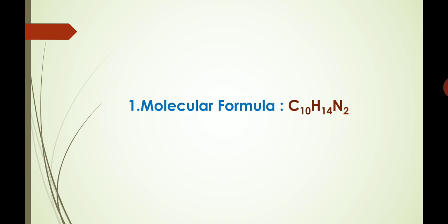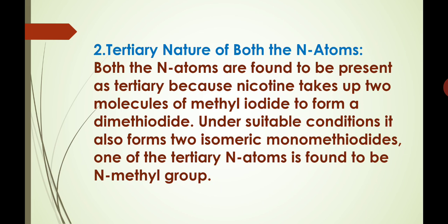Now we will discuss its structure. Its molecular formula is C₁₀H₁₄N₂, which is ascertained with the help of elemental analysis and molecular weight determinations. As we see its molecular formula contains two nitrogen atoms, so the next point is to decide the functional nature of the nitrogen atoms. It has been observed that both nitrogen atoms are tertiary in nature, because nicotine takes up two molecules of methyl iodide to form a dimethiodide.